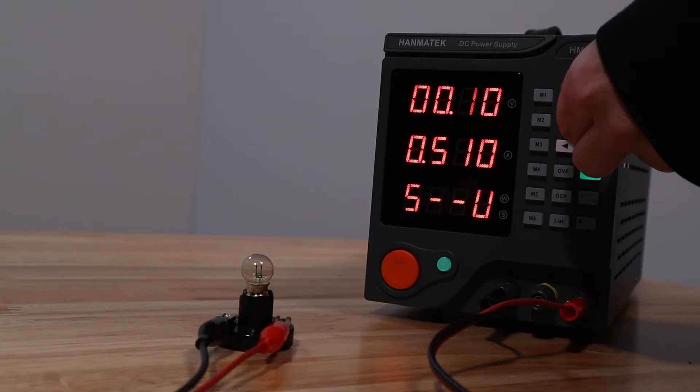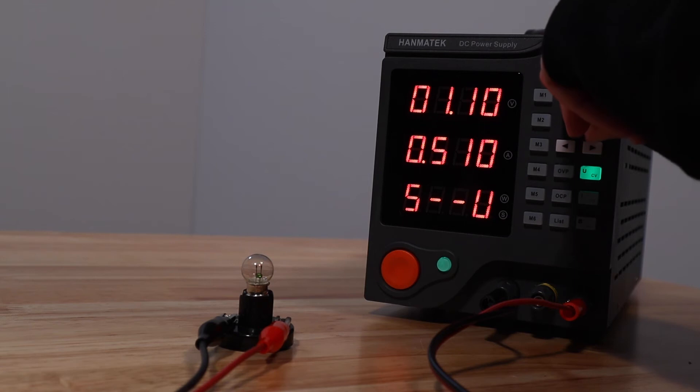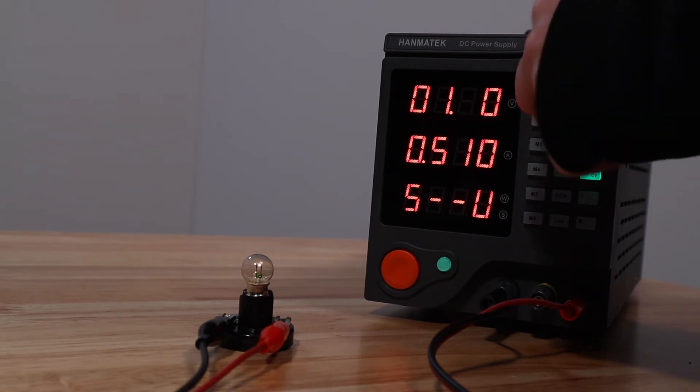LEDs are often used to replace incandescent lights. This is a 3-volt incandescent bulb. However, as I supply power to it, you can see that the light begins to glow at a much lower voltage.